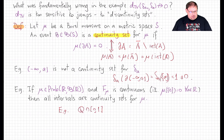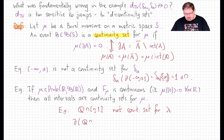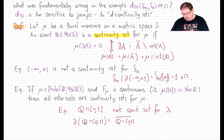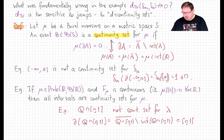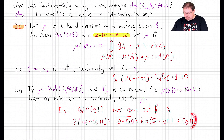We've already seen such an example. The rationals in the unit interval is not a continuity set for the Lebesgue measure. Indeed, the boundary of that set — its closure minus its interior — is just the full unit interval, since the rationals are dense but have empty interior. And the Lebesgue measure of the full unit interval is certainly not zero.